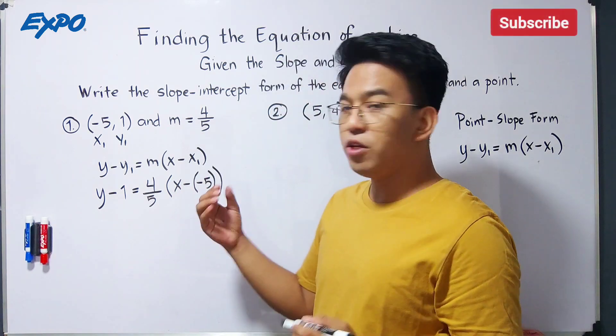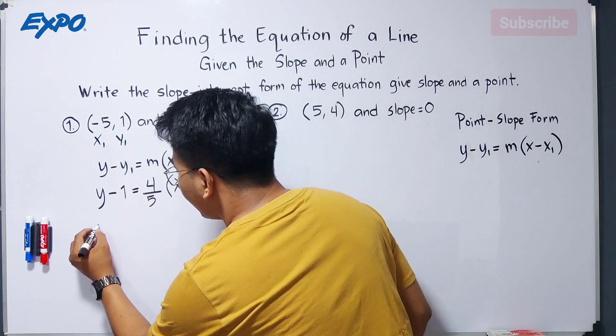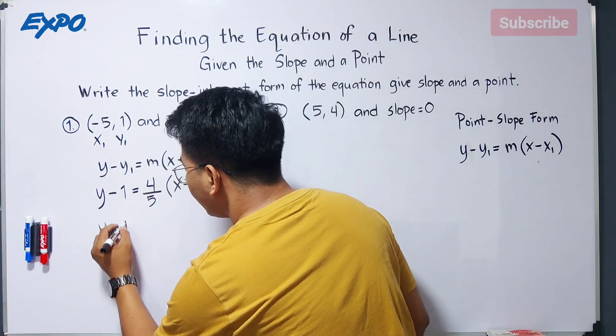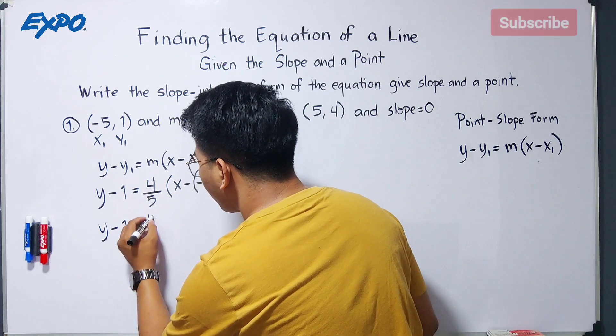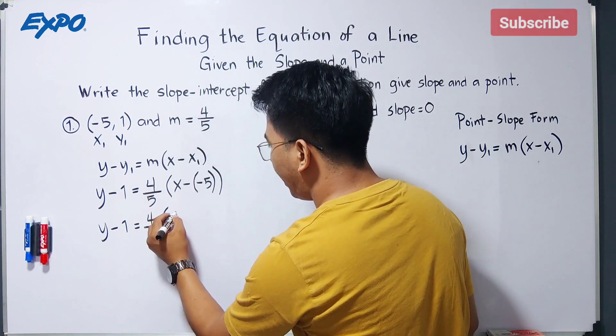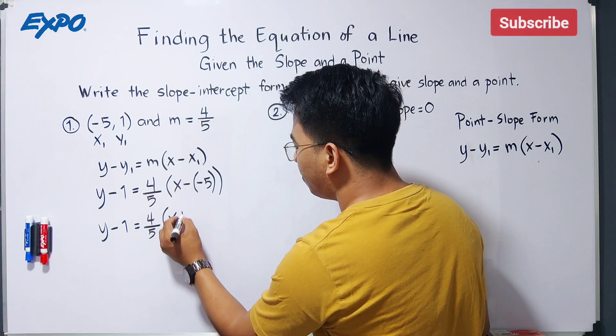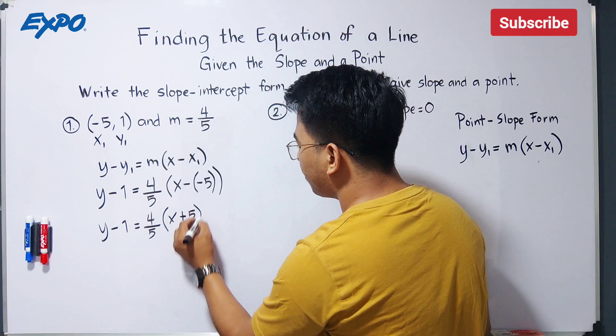First thing we need to do is to simplify this parenthesis. So copy, y minus 1 is equal to 4 over 5, then times x, then this is negative times negative is positive, so it will become plus 5.